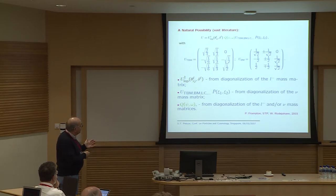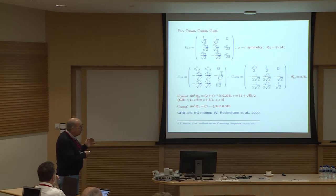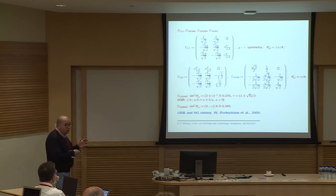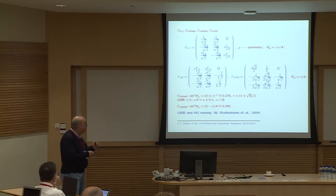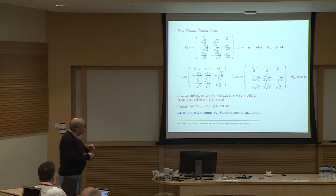Symmetry forms of the PMNS matrix widely considered in the literature include tri-bimaximal mixing, bimaximal mixing, a form corresponding to conservation of Le − Lμ − Lτ where θ₂₃ᵥ is fixed to π/4 by μ-τ symmetry, two forms related to the golden ratio — golden ratio A with sin²θ₁₂ = 0.276 and golden ratio B with 0.345 — and hexagonal mixing where θ₁₂ = π/6.